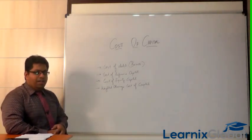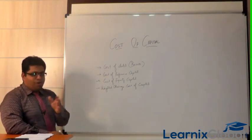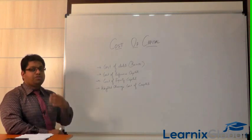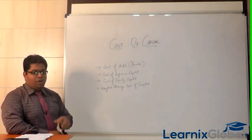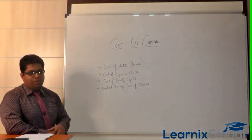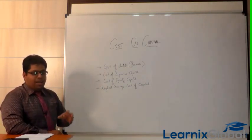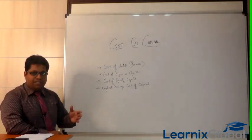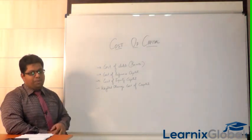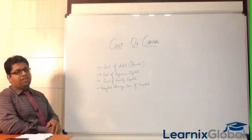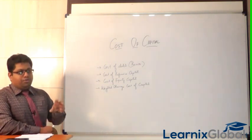You may ask why bank loans are not included here. Bank loans are also a source of finance, but we don't need to calculate their cost separately because the percentage paid as interest is already known. For bonds, variables like the difference between issue price and face value matter — if the issue price is more than face value, the bond is sold at premium; at face value means at par; below face value means at discount.